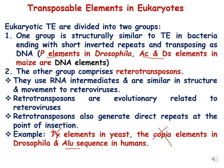As we have already discussed, transposable elements in eukaryotes are divided into two groups. One group is structurally similar to transposable elements in bacteria, ending with short inverted repeats and transposing as DNA. We have already discussed AC-DS elements in maize in detail in part 2 of the transposon video lecture. The other group comprises retrotransposons, which use RNA intermediates and are similar in structure and movement to retroviruses.